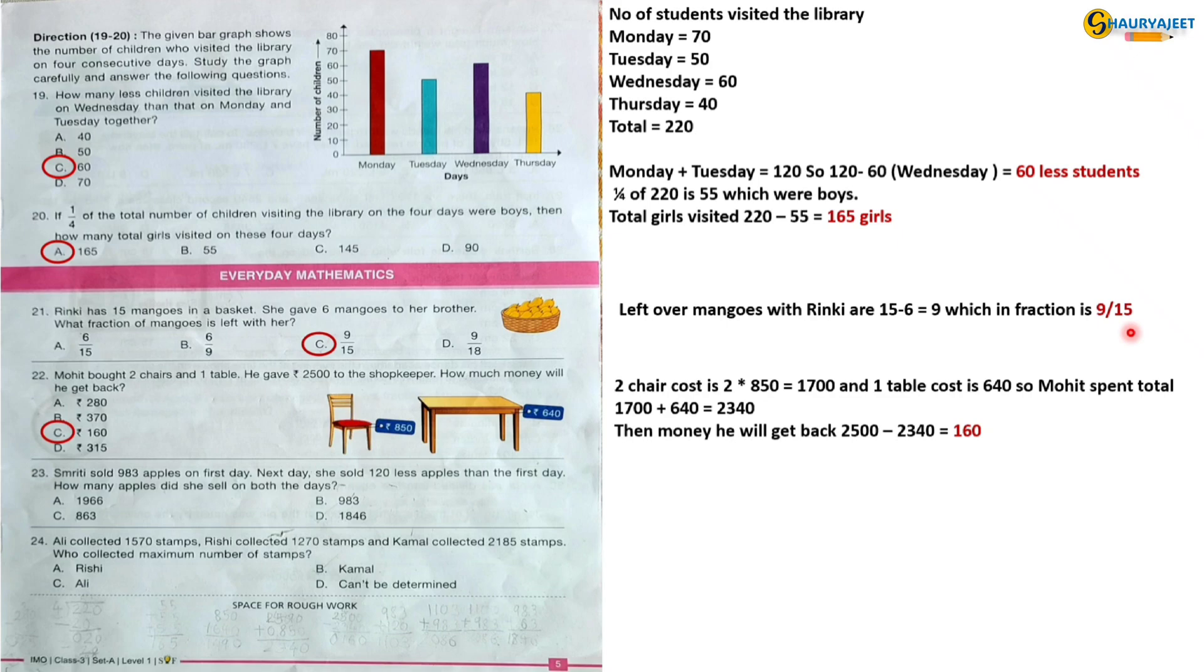Question 23: Samriti sold 983 apples on first day. Next day she sold 120 less apples than the first day. How many apples did she sell on both the days? First day sold apples are 983. Next day sold apples are 983 minus 120 that is 863. So both days she sold 983 plus 863, and that is 1846 apples.